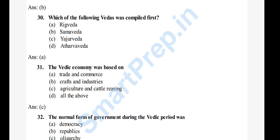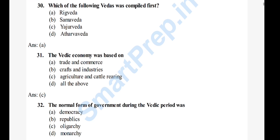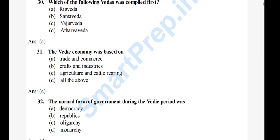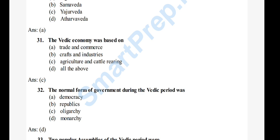Question 32: The normal form of government during the Vedic period — A) democracy, B) republic, C) oligarchy, D) monarchy. The right answer is option D, monarchy. Monarchy — the king was the ruler. This question was based on the syllabus.